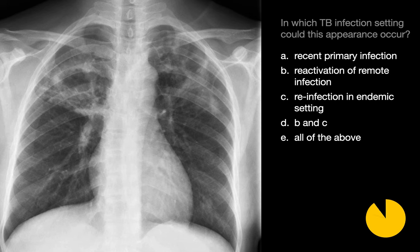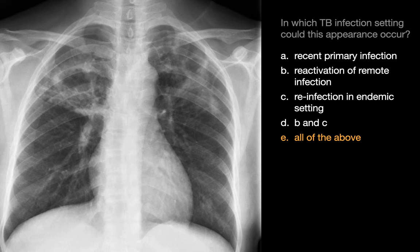In which TB infection setting could this appearance occur? It turns out that any of these situations — recent primary TB infection, reactivation of remote TB infection, or TB reinfection in an endemic setting — could result in a fibrocavitary upper lung infection pattern like we see here.